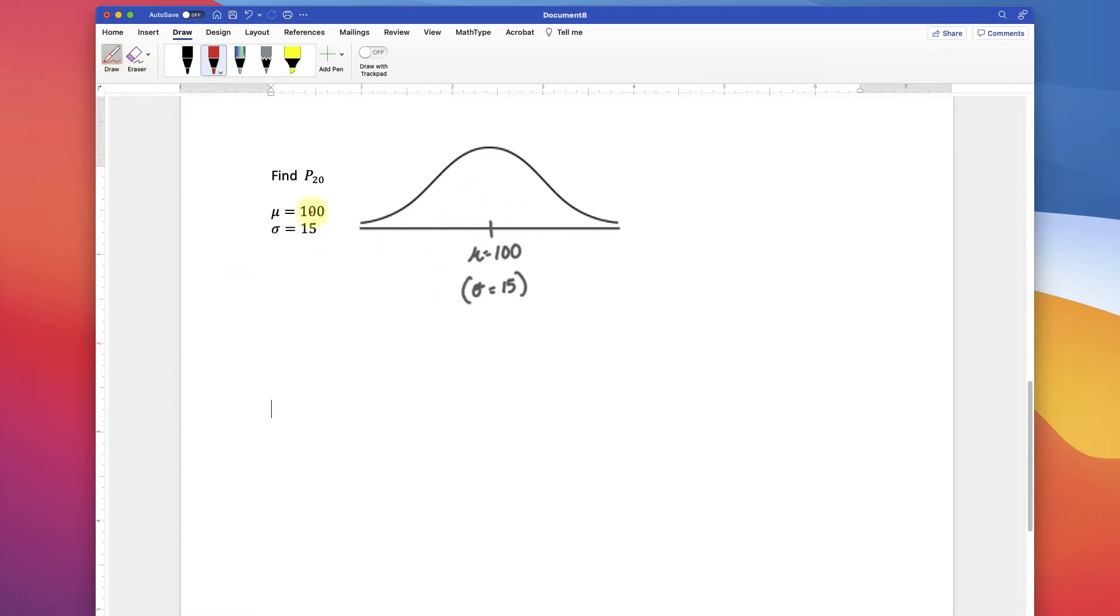We're given that the mean is 100, there in the middle the mean is 100, and each standard deviation that you go out is 15. So 15 here would be 85, 15 here would be 115, right?